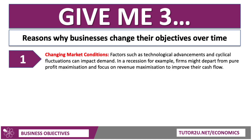One reason is when the market and the economy changes. Factors such as technological advancements and cyclical fluctuations can impact on demand. A good example would be a recession or a broader economic downturn. In a recession, we often find that firms move away from pure profit maximization — instead they focus on revenue maximization, maybe cutting prices to increase sales in order to improve their cash flow. So the objective of a business can change at different points of the economic cycle.